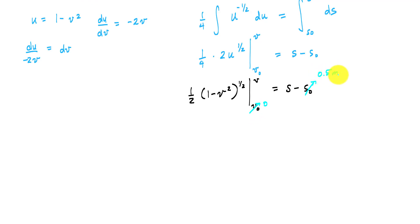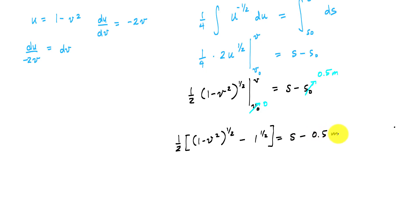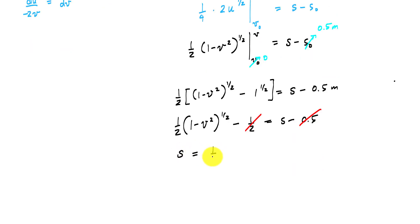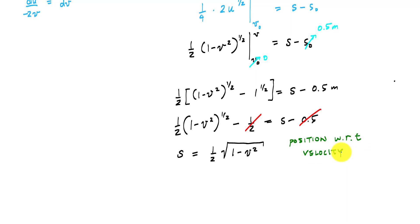Evaluating the integral gives: one-half times the quantity 1 minus v squared to the one-half, minus 1 to the one-half, equals s minus 0.5 meters. Simplifying, I get s equals one-half times the square root of 1 minus v squared. This is essentially position as a function of velocity. The units will output in meters.